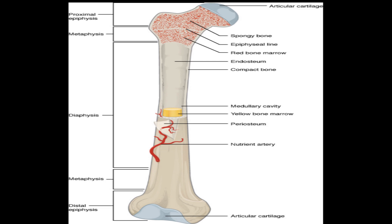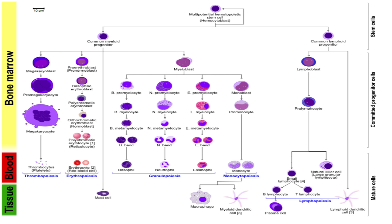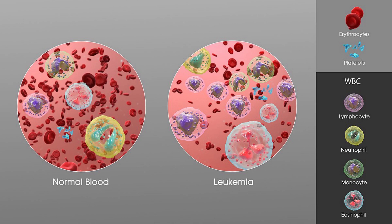Leukemia is a cancer that affects the blood and bone marrow, disrupting the normal production of white blood cells. Leukemia starts in the bone marrow, the spongy tissue inside bones where blood cells are made. The word leukemia comes from the Greek words leukos and hyma, reflecting its impact on white blood cells.